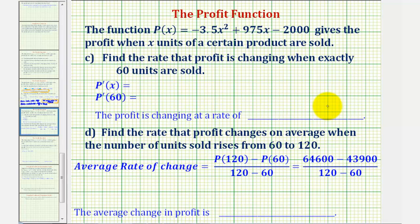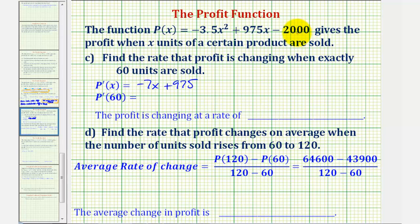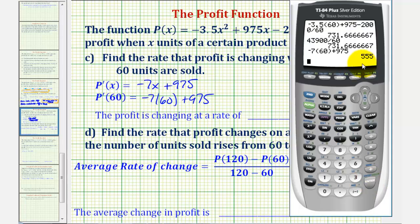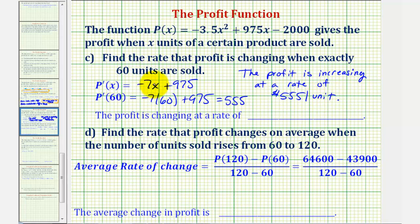For part C, we're asked to find the rate the profit is changing when exactly 60 units are sold, which is the value of the derivative function at x equals 60 — also called the marginal profit at x equals 60. Finding the derivative: the first term gives negative 7x, the second term gives plus 975, and the constant gives 0. So p prime of x equals negative 7x plus 975. Evaluating at x equals 60 gives 555. This means the profit is increasing at a rate of $555 per unit when exactly 60 units are sold.